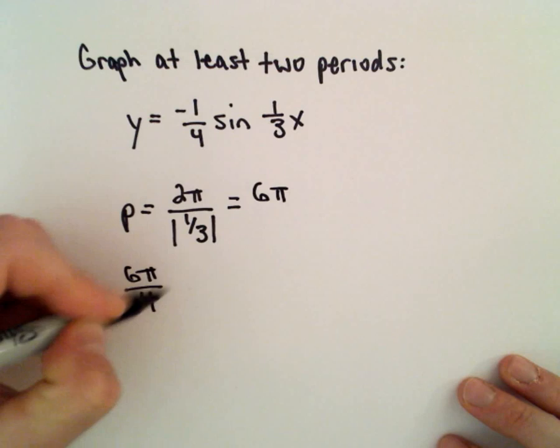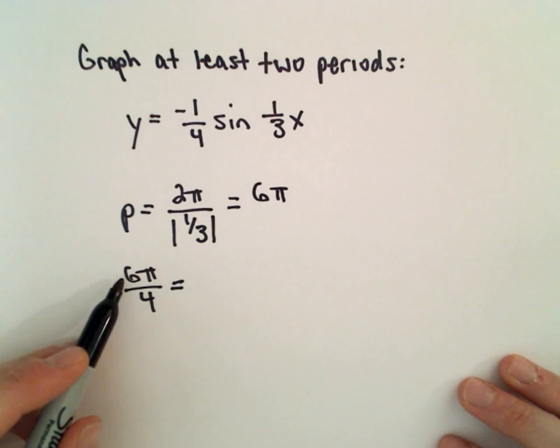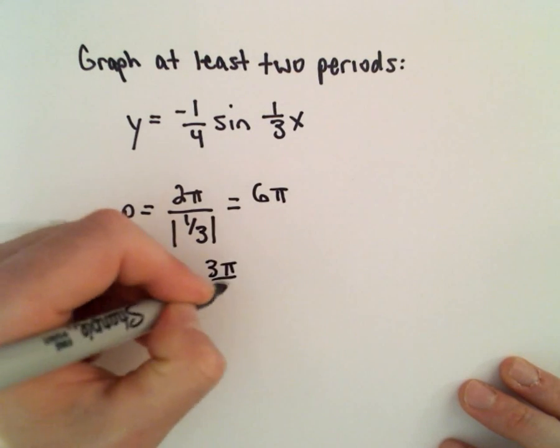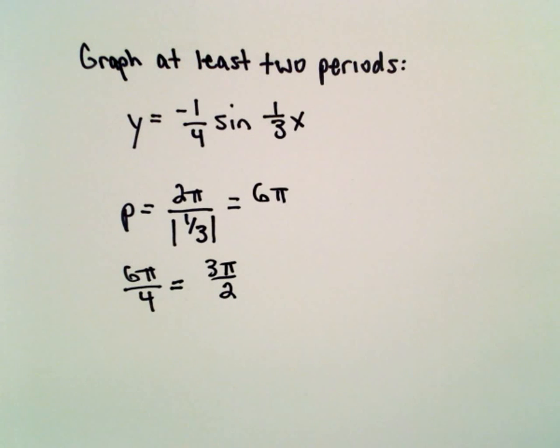Again, for my increments, I divide these into four equal pieces. 6 pi over 4 will give us 3 pi over 2, so I'm going to use that as the increments.